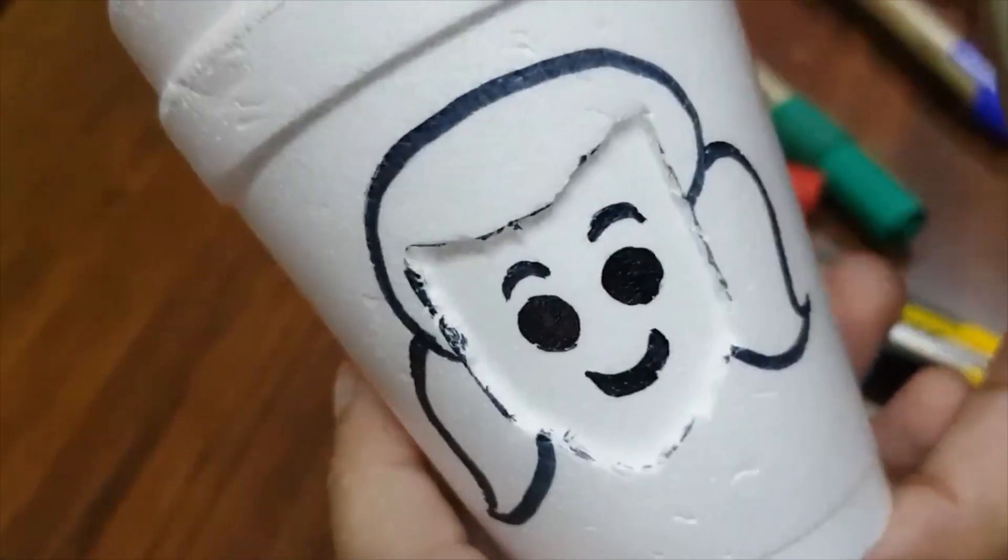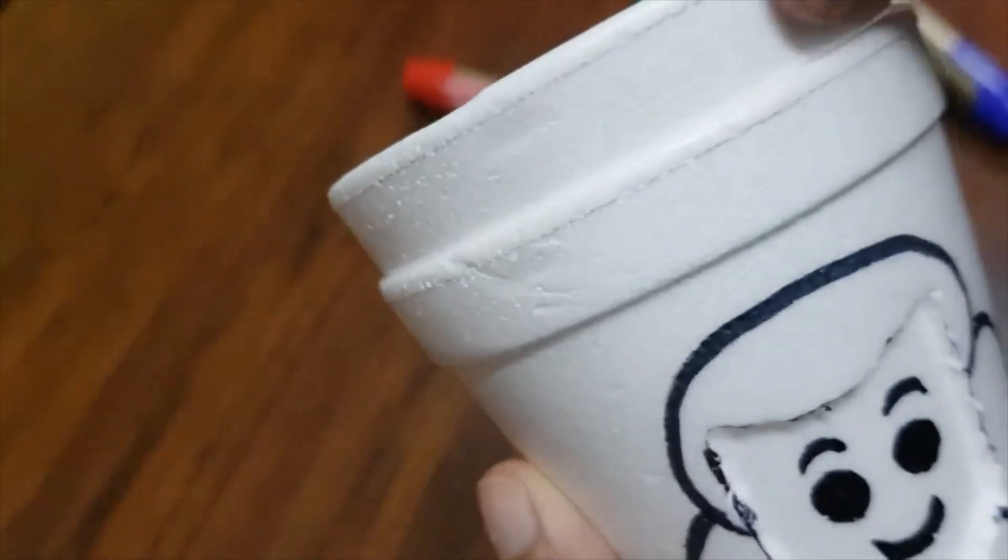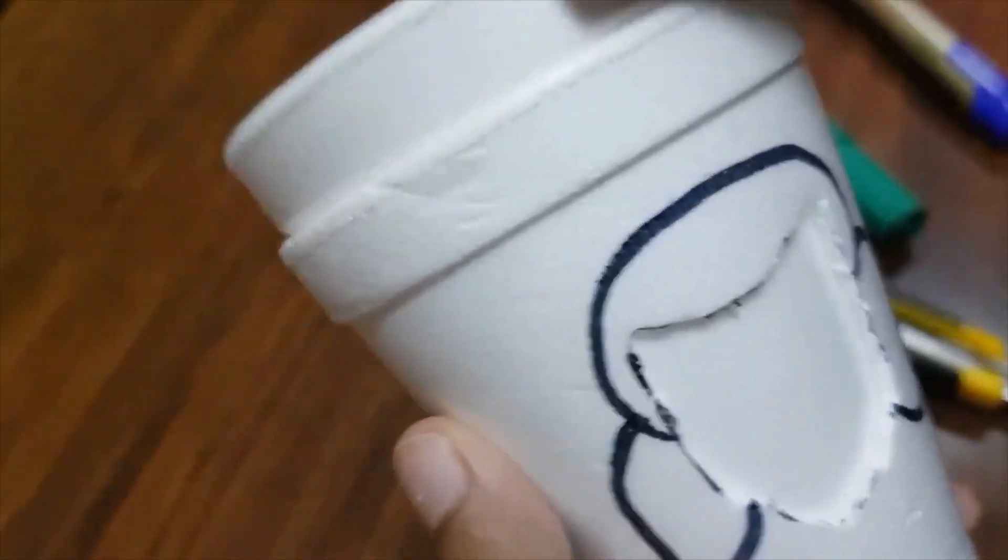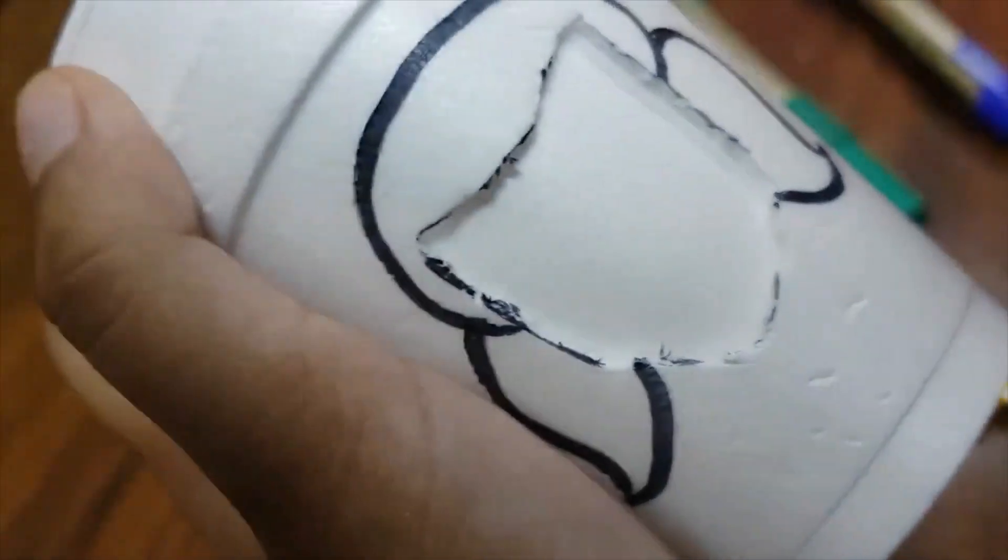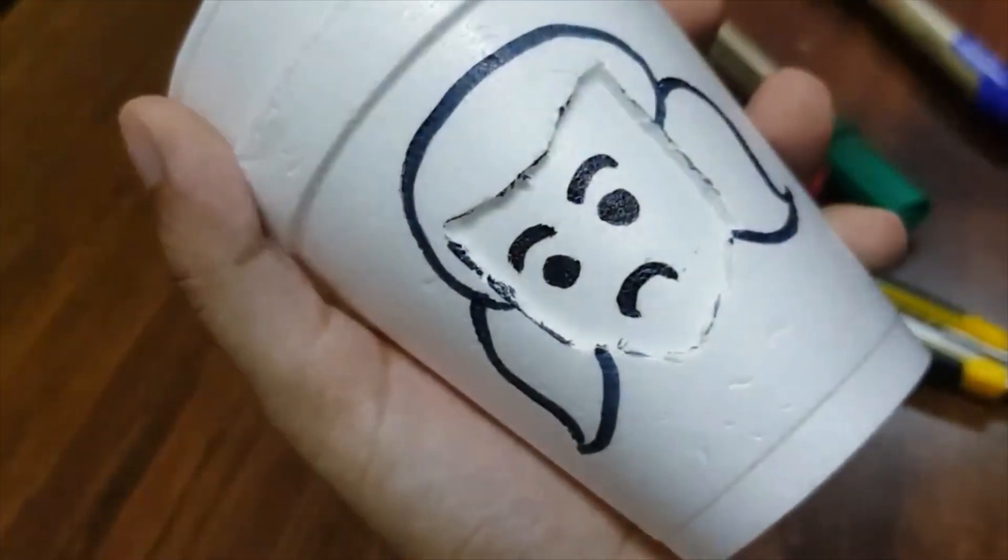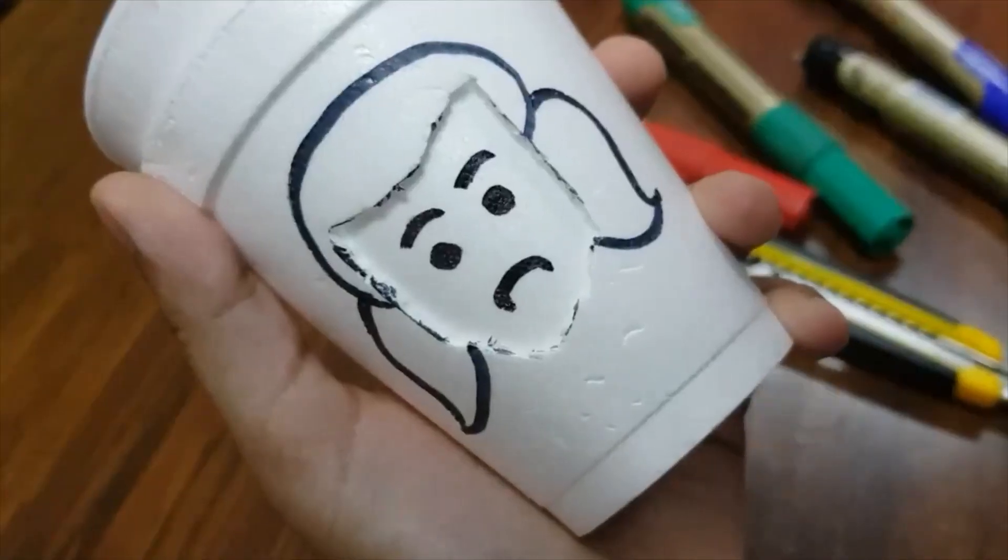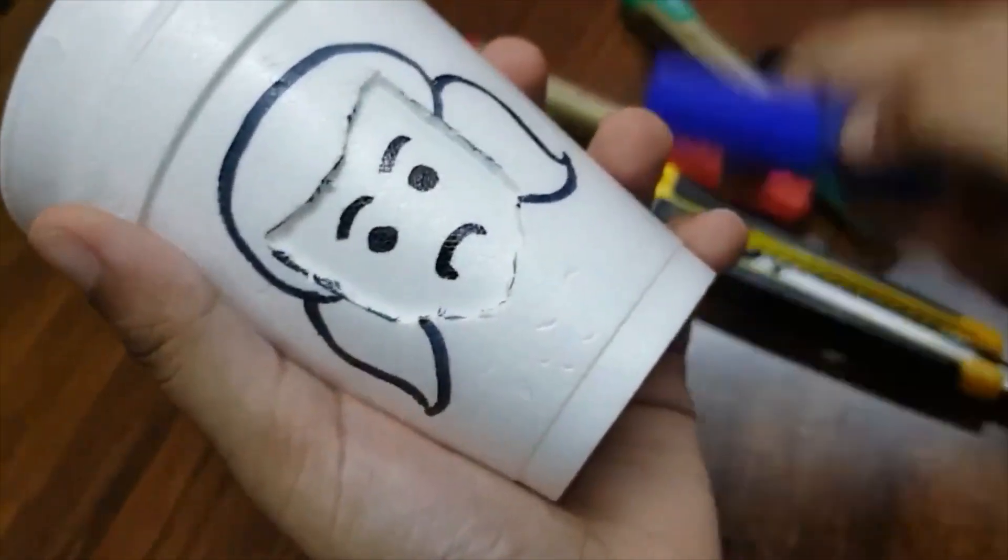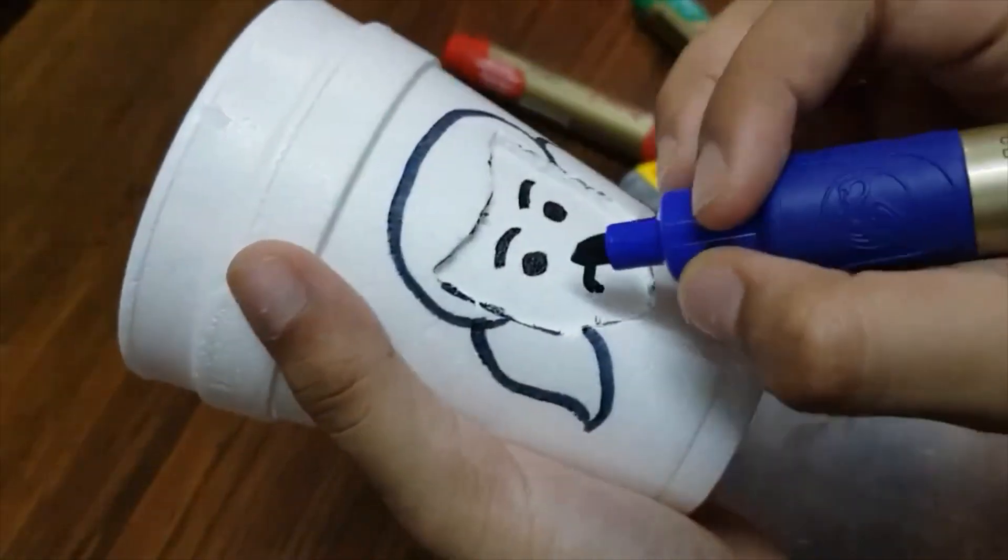So here we've got one face done. Now what you have to do is you have to slowly twist the second cup and get another nice fresh area and keep on drawing facial expressions just like this. So now I'm going to make a crying face. For that, I'm going to be using the blue color to make the tears.